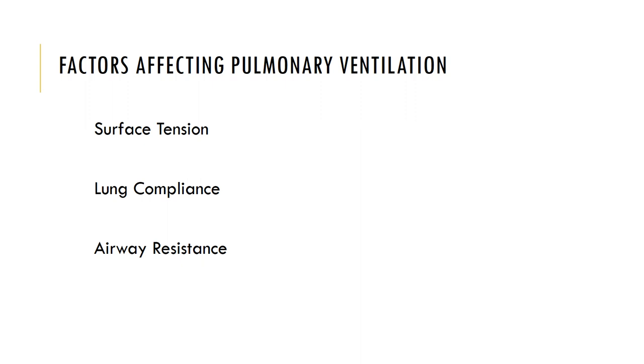At rest, the muscular activity involved in pulmonary ventilation accounts for about 3–5% of the resting energy demand. The higher the resistance, the harder it is to force air along the conducting passageways; the lower the resistance, the more easily air flows. This is regulated by bronchodilation and bronchoconstriction.